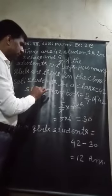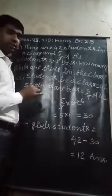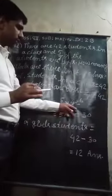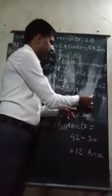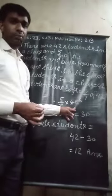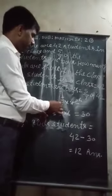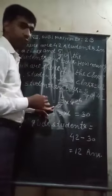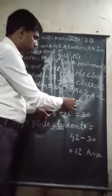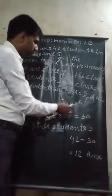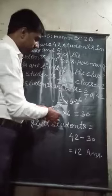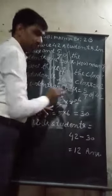And students that are boys, students are boys will be 5 by 7 of 42. So, we have to calculate 5 by 7 of 42. Then here 5 by 7 of 42. Then 7 into 42 is 6, it will be 5 multiplied by 6. So, 5 multiplied by 6 equal to 30.